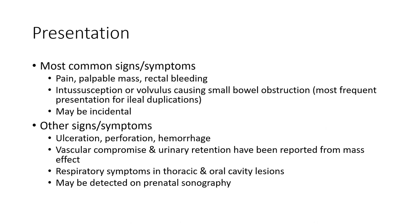Most common signs and symptoms include pain, palpable mass, rectal bleeding, intussusception, or small bowel obstruction. The most frequent presentation for ileal duplication may be incidental. Other reported signs and symptoms include obstruction, perforation, torsion, vascular compromise, and urinary retention. Respiratory symptoms occur in thoracic and oral cavity lesions, and lesions may be detected on prenatal sonography.